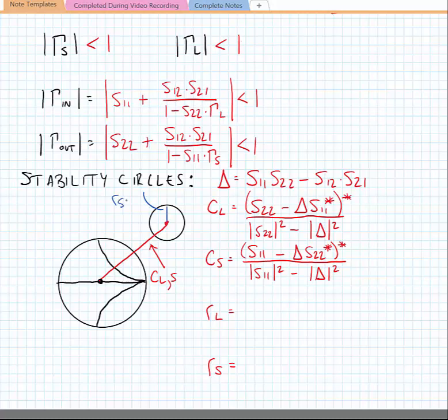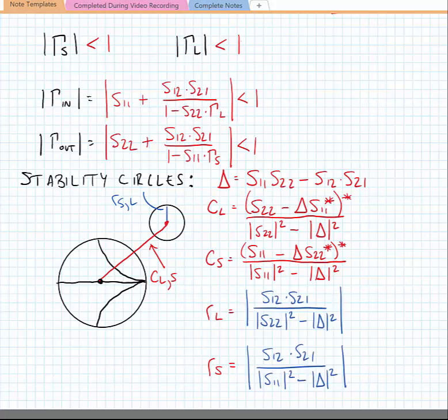This radius would be R_S or R_L, and they're given by the following. Now as I've drawn it, the stability circle lies entirely outside of the Smith chart, which we'll see in a moment is a good thing.